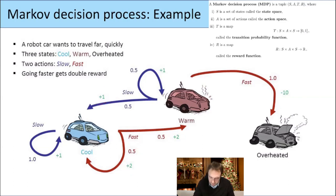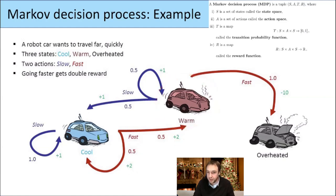If we are already in the state 'warm' and we go fast, then our car overheats and we get a reward of minus 10.